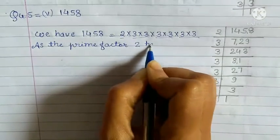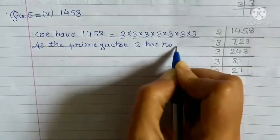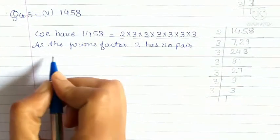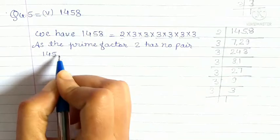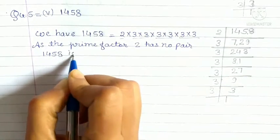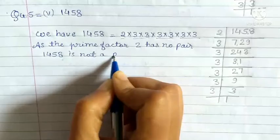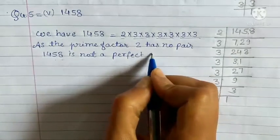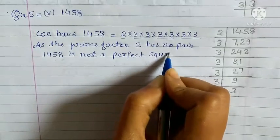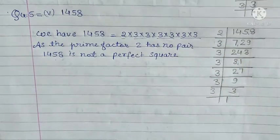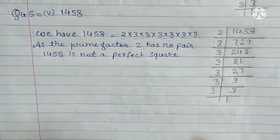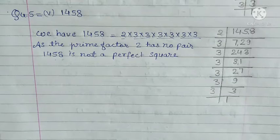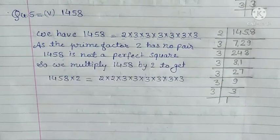2 has no pair — 2 का कोई भी pair नहीं है। So this number, 1458, is not a perfect square. But if we multiply this number by 2 — because 2 is the only factor missing a pair — then that number will become a perfect square.